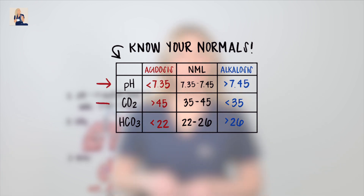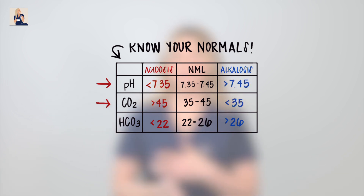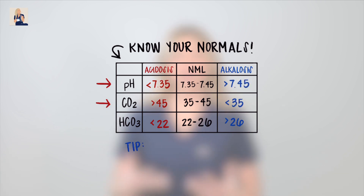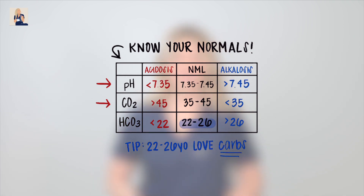A helpful tip is that pH and CO2 are the same numbers, just flipped. And for bicarb, think '22 to 26 year olds love carbs,' so the range is 22 to 26.